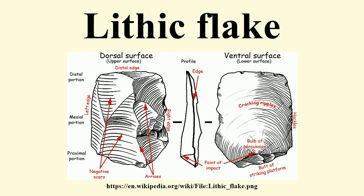The relative abundance of each type of flake can indicate what sort of lithic work was going on at a particular spot at a particular point in time. A blade is defined as a flake with parallel or subparallel margins that is usually at least twice as long as it is wide.